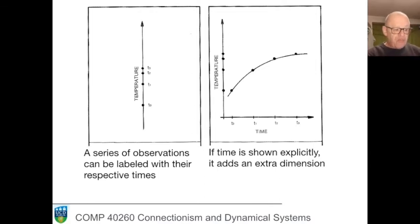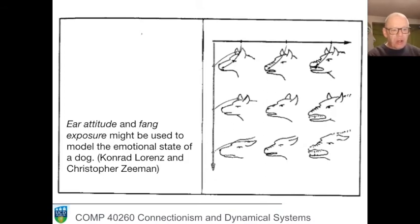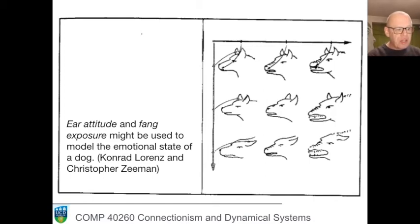A two-dimensional state space is easy to construct. Consider the emotional state of a dog — an enormously complicated thing. Animal ethologists like Konrad Lorenz and Christopher Zeeman described a two-dimensional state space: if we note ear attitude (ears up, down, or middle) and fang exposure (is the dog showing its fangs?), we get a state space. We can record these two variables and track variation in the emotional state of a dog.